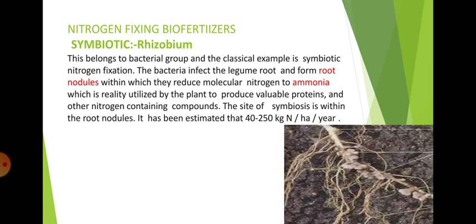Nitrogen fixing biofertilizers are of two types: symbiotic and non-symbiotic. Here we will discuss the symbiotic Rhizobium. This belongs to the bacterial group and is the classical example of symbiotic nitrogen fixation. The bacteria infect the legume root and form root nodules within which they reduce molecular nitrogen to ammonia, which is readily utilized by the plant to produce valuable proteins and other nitrogen-containing compounds. The site of symbiosis is within the root nodules.